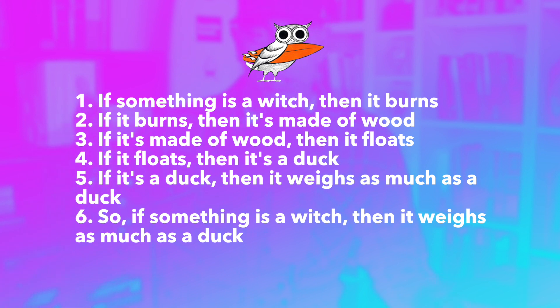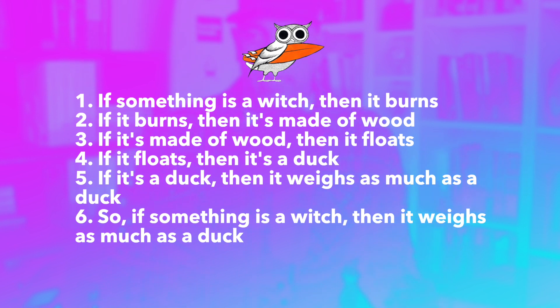Premise two and premise four are not really the way that Sir Bedivere gives them in the movie — they're actually swapped around, and because of that it sounds slightly more plausible. It's clearly a ridiculous argument, but if we symbolized it the way he said it, it would be clearly logically fallacious. So instead I traded it for clearly false propositions. Here's our symbolization: W for 'thing is a witch,' B for 'it burns,' O for 'made out of wood' (two Ws here), F for 'it floats,' D for 'it's a duck,' and P for 'it weighs as much as a duck' — P for pounds.